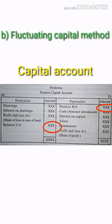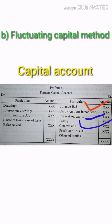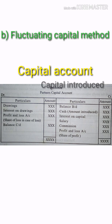In the Fluctuating Capital Method, the debit side includes: Drawings, Interest on Drawings, and Share of Loss. The credit side includes: Cash, Capital Contribution, Interest on Capital, Salary, Commission, and Share of Profit. All of these are recorded in the Capital Account.